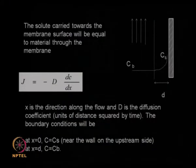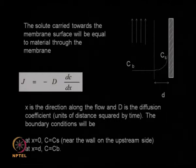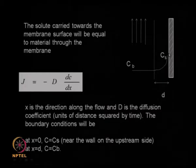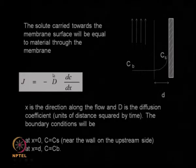If you remember this particular slide, we talked about concentration polarization that happens because as the solution flows perpendicular to the surface of the membrane, there is a buildup of concentration of the solute in the upstream near the wall of the membrane material. The bulk concentration of the solute will be much lower than the concentration near the wall, and sometimes these values may be 50 or 60 percent or even much larger.